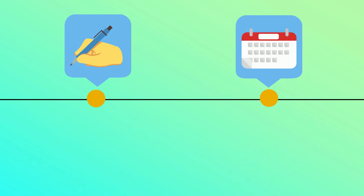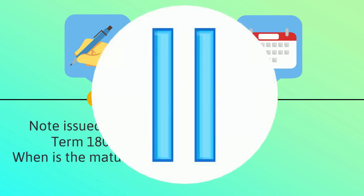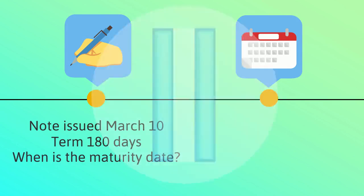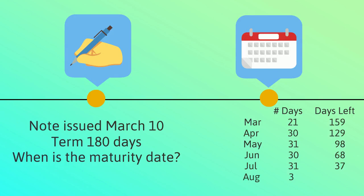Let's try one more. A note issued on March 10th with a term of 180 days — when is the maturity date? There are 21 days left in March. Counting through the remaining months and keeping track of days used, we work all the way through to September, where we need 6 more days to reach 180. The maturity date is September 6th.